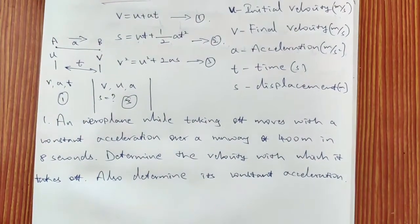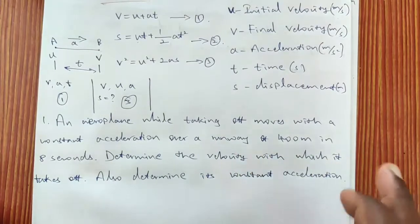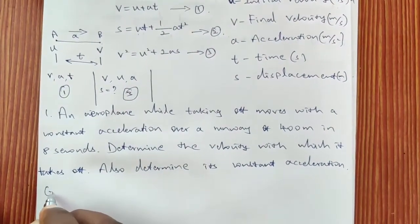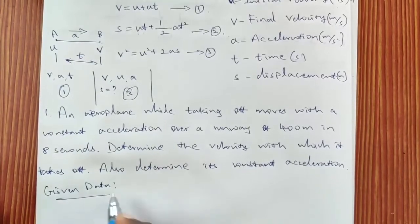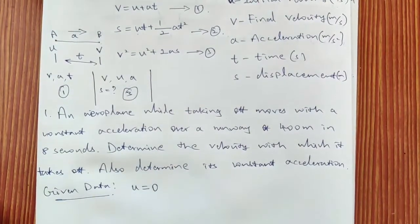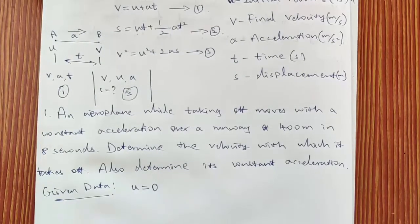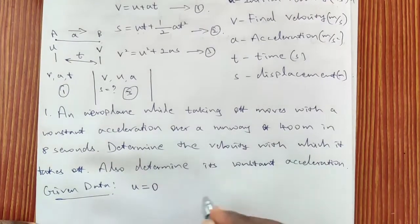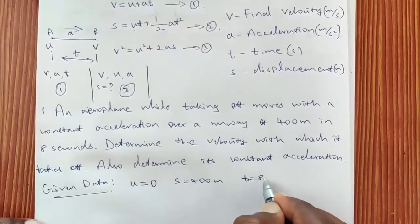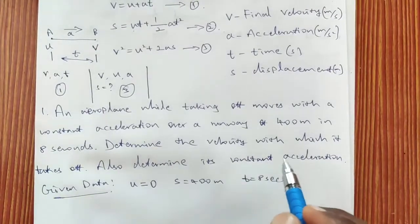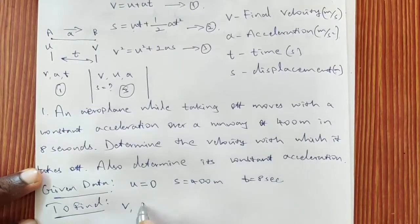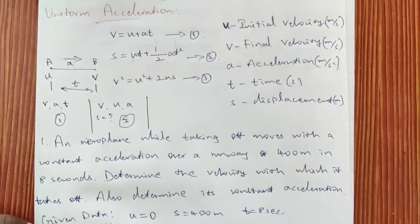The first problem: an aeroplane while taking off moves with constant acceleration over a runway of 400 metres in 8 seconds. The aeroplane starts from rest, so the initial velocity u = 0. The distance s = 400 m and time t = 8 seconds. We have to determine the final velocity with which it takes off and the acceleration.